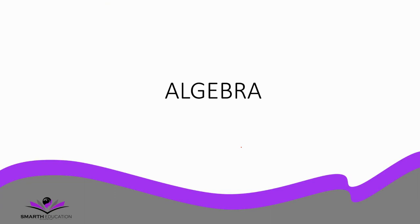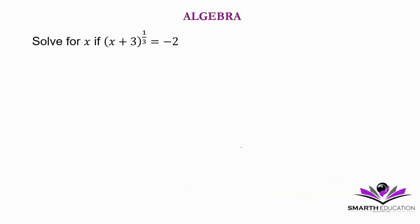Welcome back. Let's do question 2a. Solve for x if x plus 3 to the power 1 over 3 is equal to negative 2.